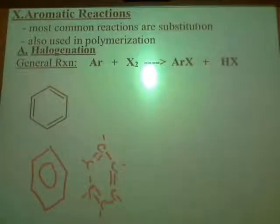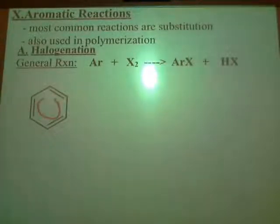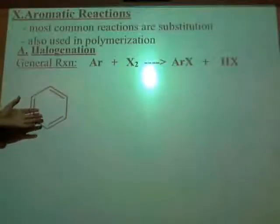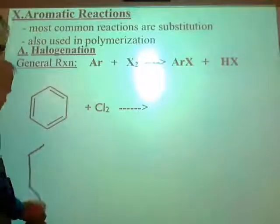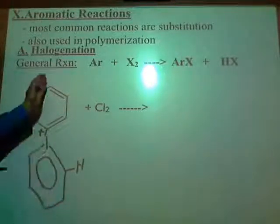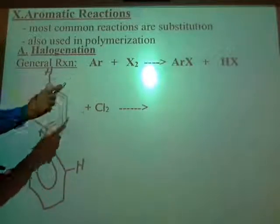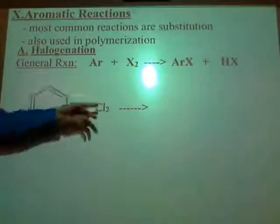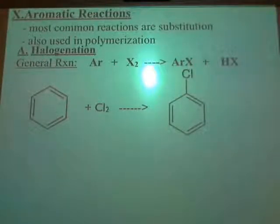Remember, the double bonds are not really here and not there — they're a resonance structure. I will most likely draw benzene with a ring inside. Now, if I take benzene and add it to chlorine, what's going to happen? What's not shown in either way I draw these is the fact that there are H's coming out of each carbon — an H coming off of each carbon, because each carbon has four things bound to it. One of those H's is going to come off and combine with one of the chlorines, and the other chlorine is going to come in and take its place.